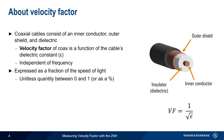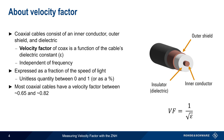Note that you may sometimes see velocity factors specified as a percentage as well. Most coaxial cables have a velocity factor between about 0.65 and 0.82, although in some cases you may see cables with a velocity factor as low as 0.5 or as high as 0.9.